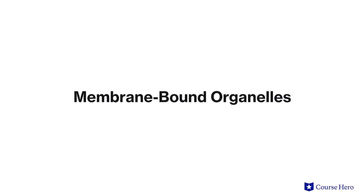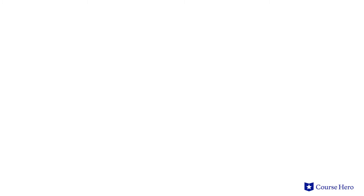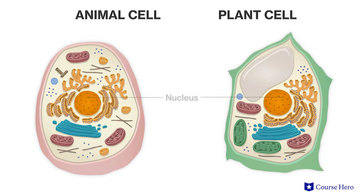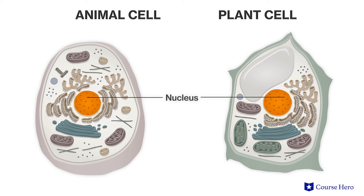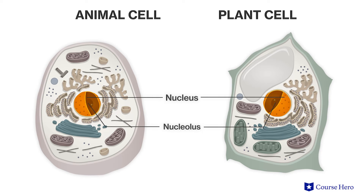Let's start by looking at organelles that are common to all eukaryotic cells. The nucleus is bound by a double membrane, known as the nuclear envelope, and is sometimes referred to as the control center of the cell because it houses most of the cell's DNA. Within the nucleus is the nucleolus, the site of ribosome synthesis.